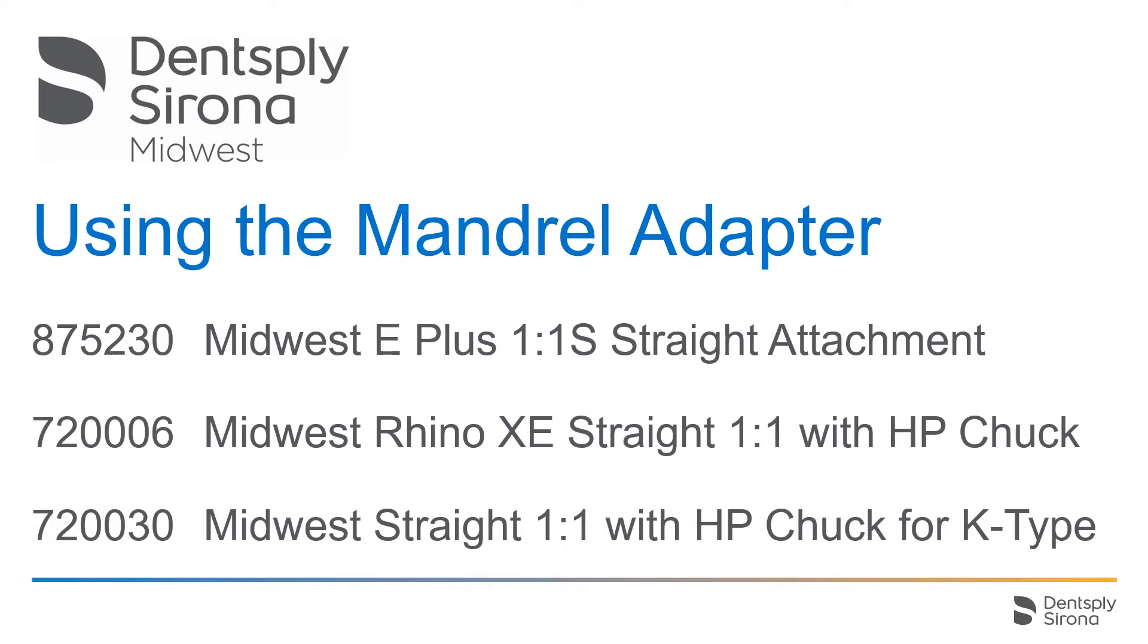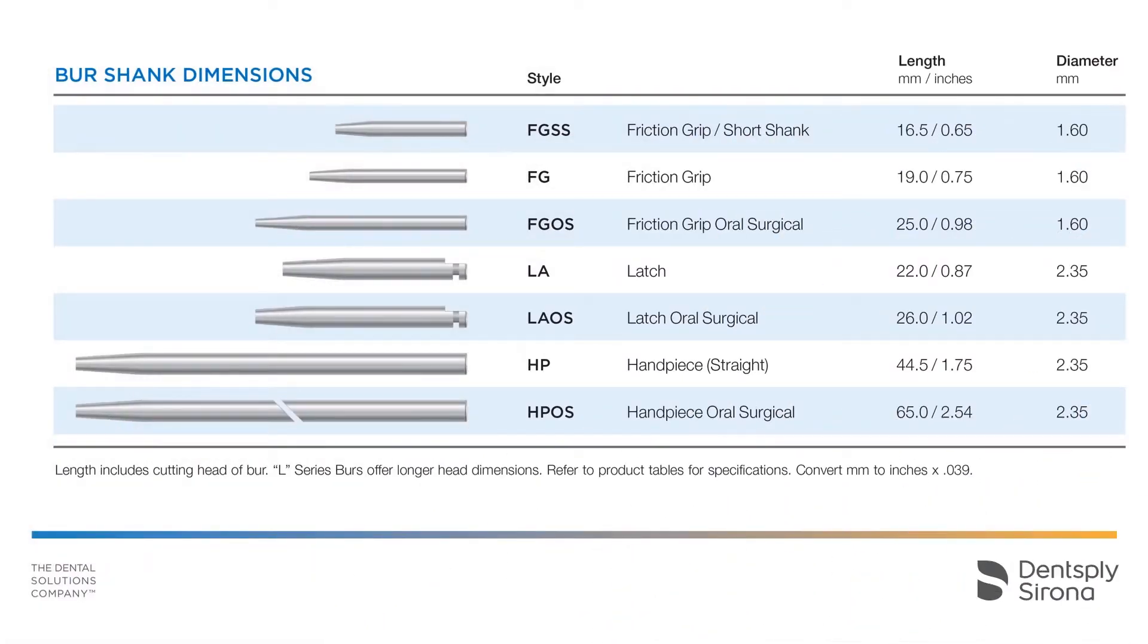Three different straight attachments but they all come with this mandrel adapter. This is going to give you an option for either inserting a handpiece length burr into the straight attachment, or if you would like to use a latch type contra angle handpiece burr, you can insert this mandrel in.